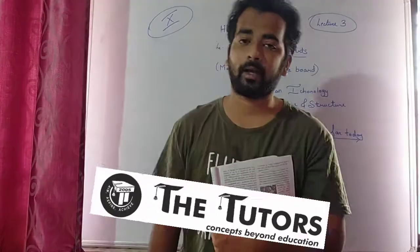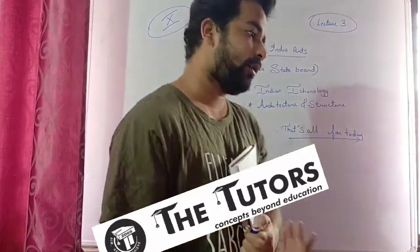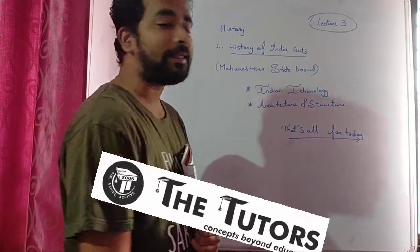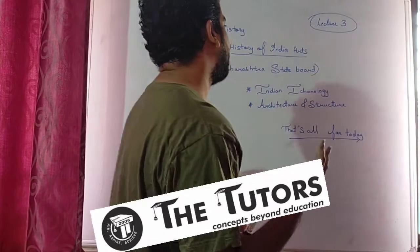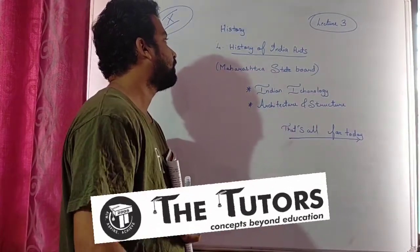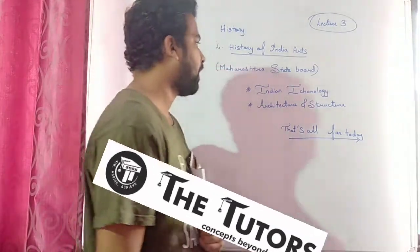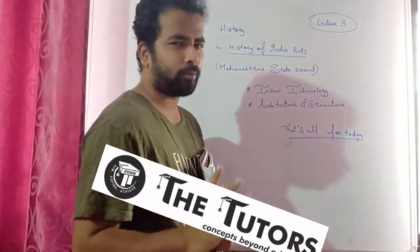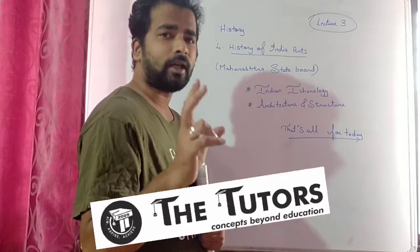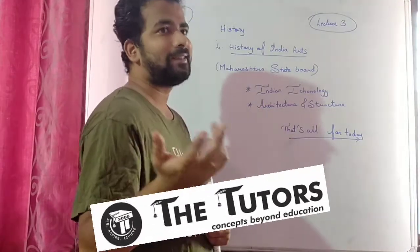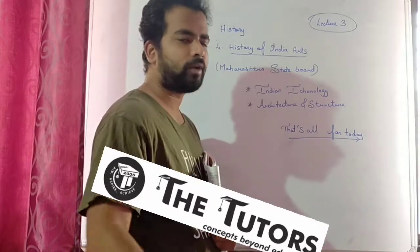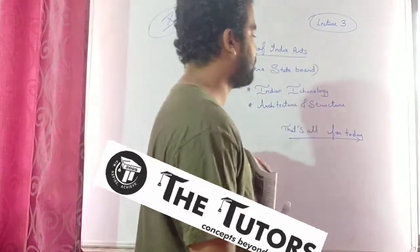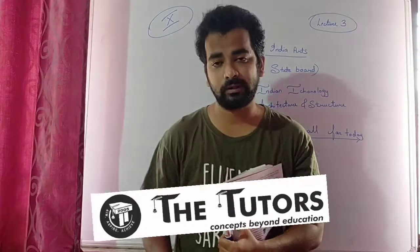Good morning. Today we are going to take standard lecture number 3 for chapter number 4 of History of India Arts. It is a Maharashtra course and we are going to cover two huge topics today: Indian iconology, and architecture and structure of India. We are going to cover these two topics. It will take between 15 to 20 minutes to complete this lecture.